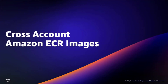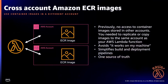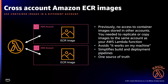The next feature is cross-account ECR images. Lambda now allows you to create or update your functions with container images stored in a different account than your Lambda function. Previously, you needed to replicate images into an ECR repository in the same account. Customers often use different AWS accounts for different projects or teams, so this allows them to pull images from other projects, teams, or environments. It also simplifies builds and deployment pipelines — you create it in one account and access it from anywhere, giving you one source of truth.